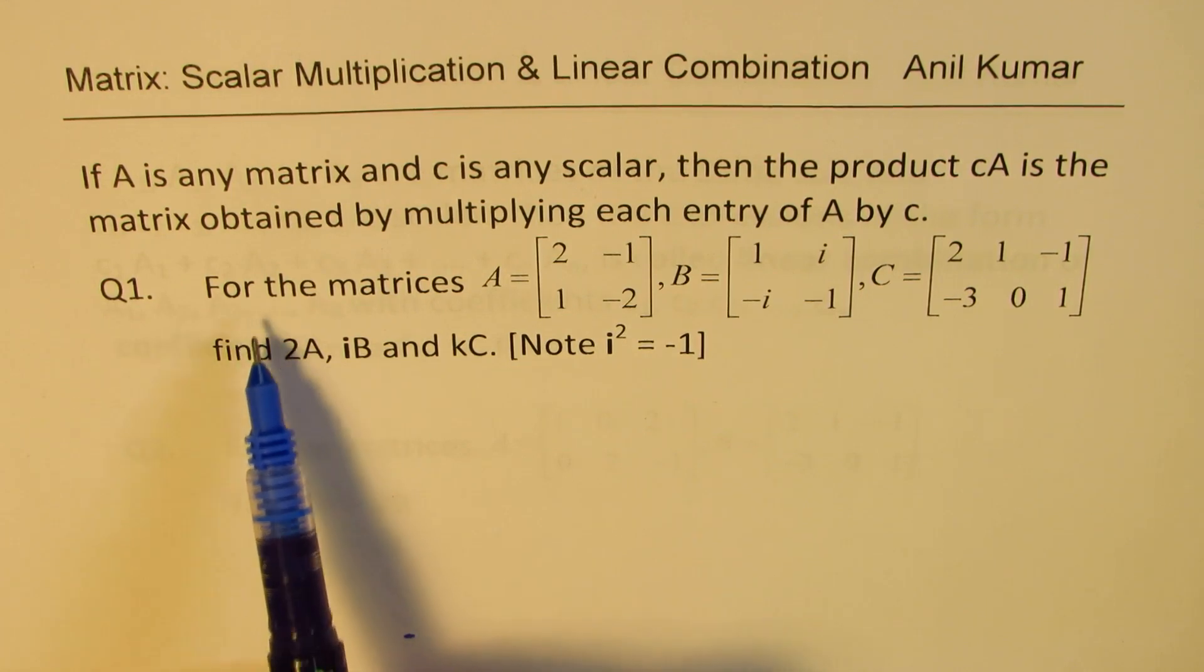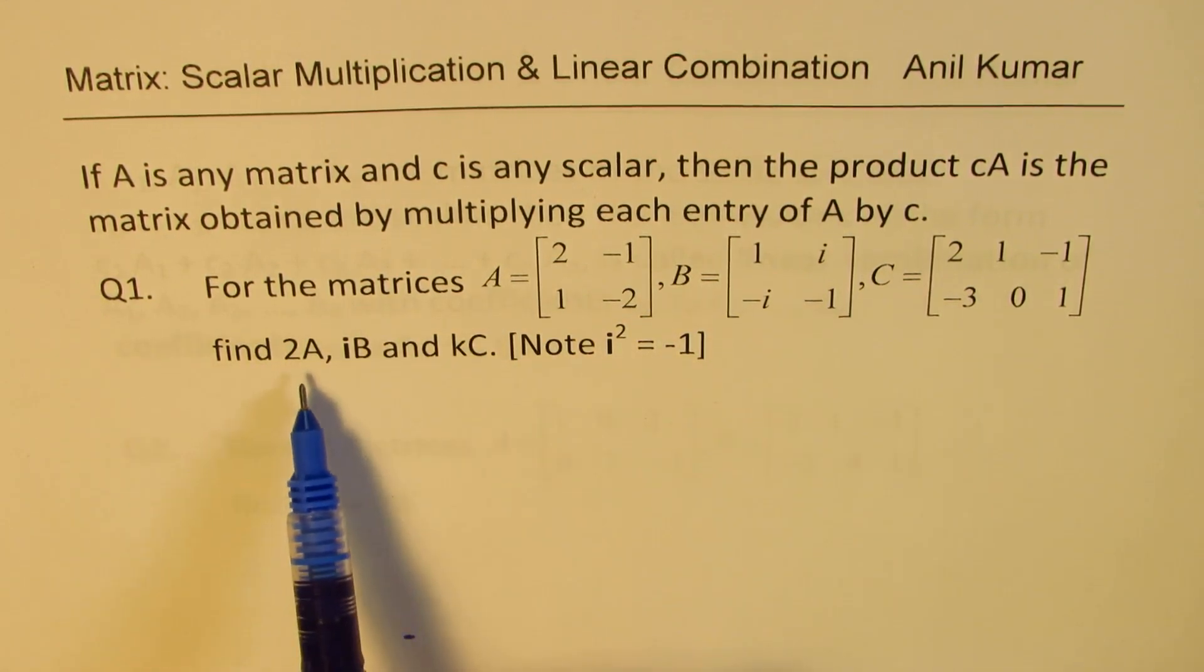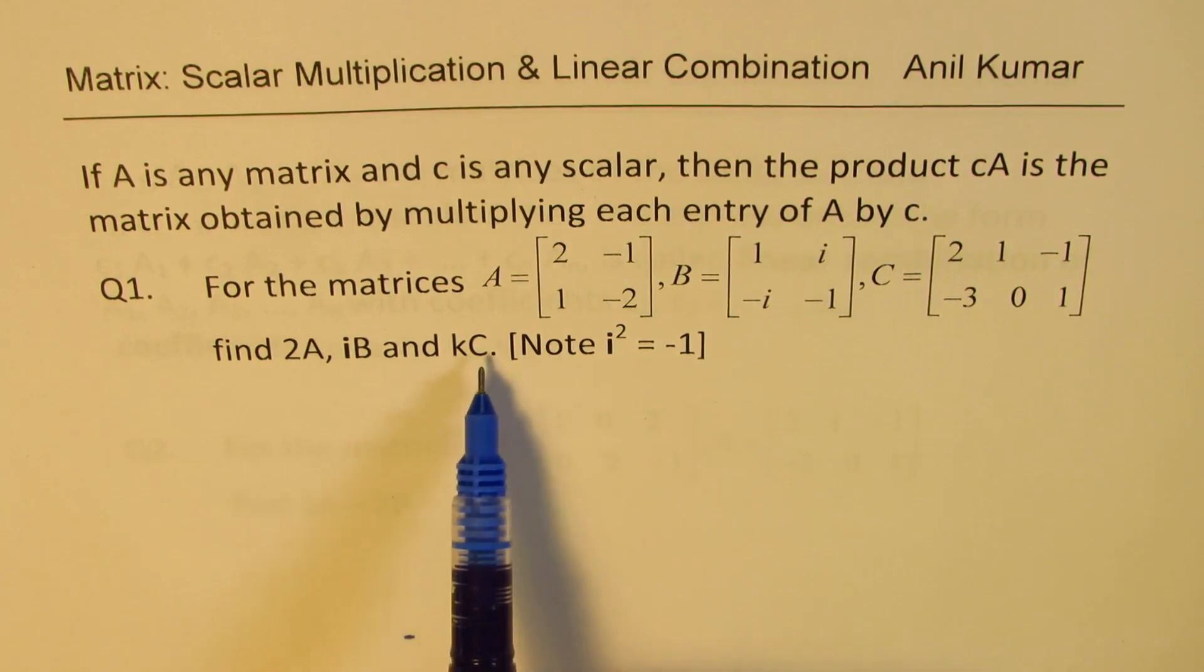So the example here is for the matrix A, B and C find 2A, iB and kC where i squared is minus 1.